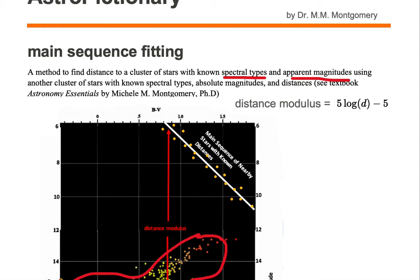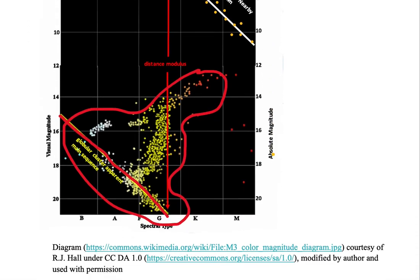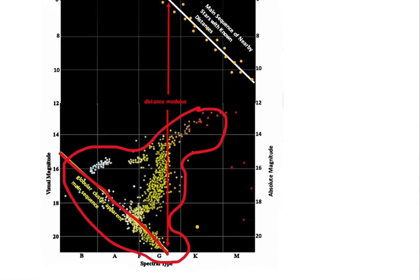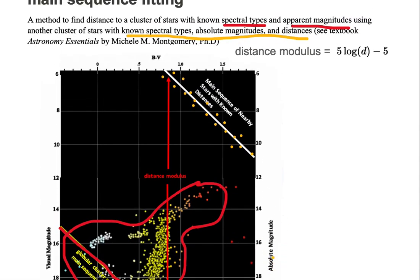Next, we want to find stars with known spectral types, absolute magnitudes, and distances. Then we plot the stars that have their known spectral types and their known absolute magnitudes on the diagram. We identify the main sequence of this known set of stars.